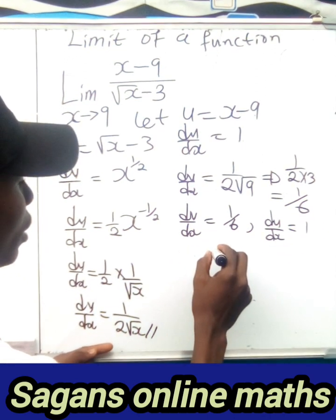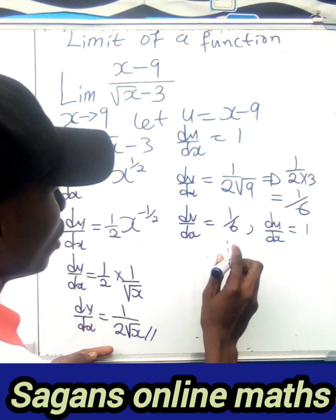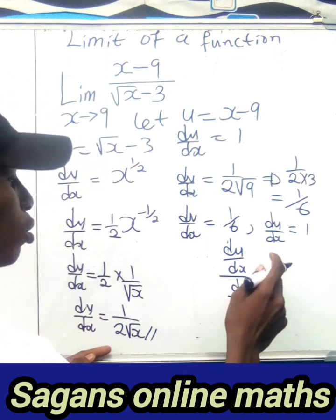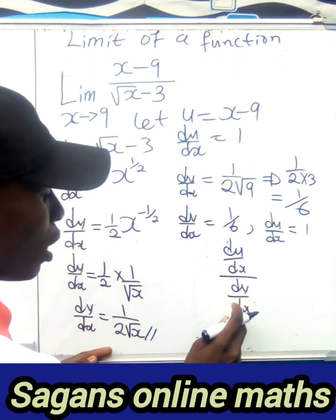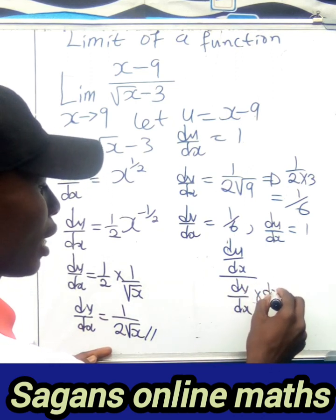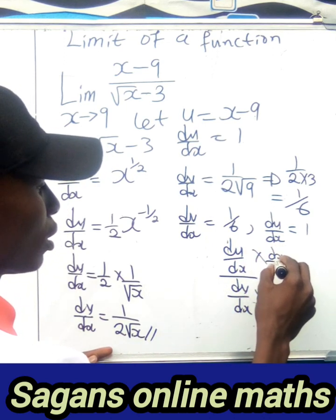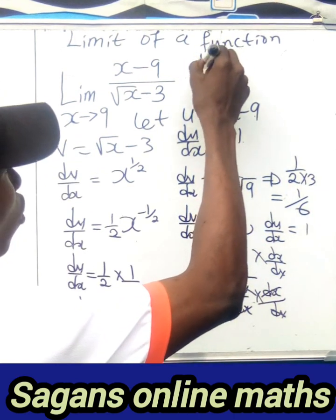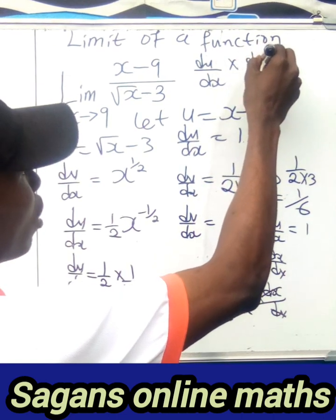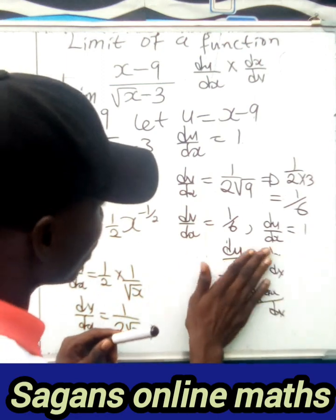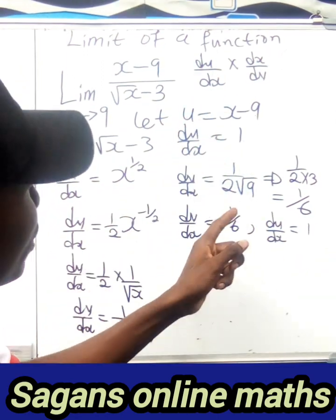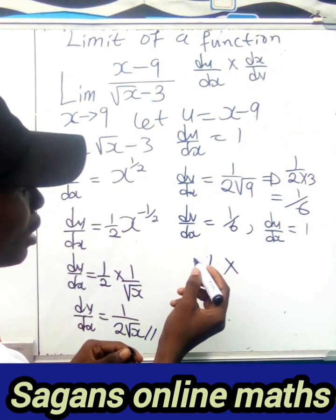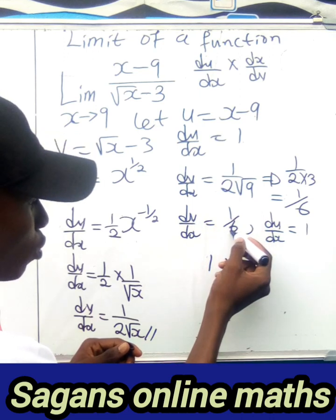Now the limit equals du/dx divided by dv/dx. Multiplying numerator and denominator by the reciprocal of dv/dx: du/dx times dx/dv gives us 1 multiplied by dx/dv. Since dv/dx is 1/6, the reciprocal dx/dv is 6. So we have 1 times 6, which equals 6.